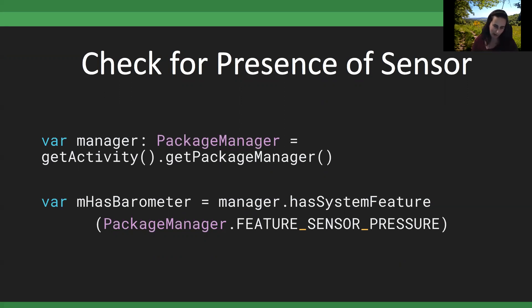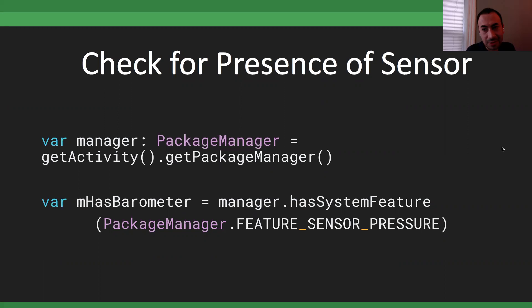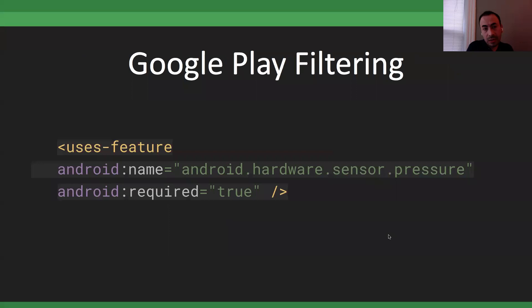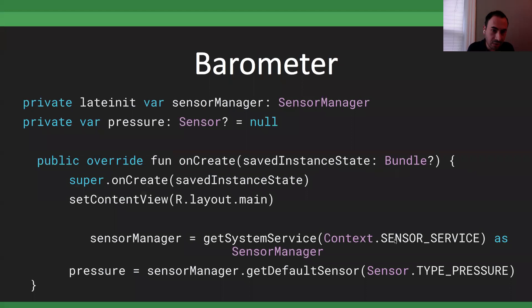Before using any sensors in Android, you need to check if they exist — calling a sensor that isn't present will throw a NullPointerException and crash your app. I use a PackageManager class to create a boolean variable checking PackageManager.FEATURE_SENSOR_BAROMETER (calling the system pressure). If it returns true, the sensor exists; if not, you want to handle that with a different path in your app. You can also filter via Google Play by declaring required sensors in your manifest, preventing installation on devices lacking the sensor.